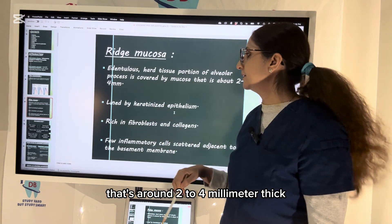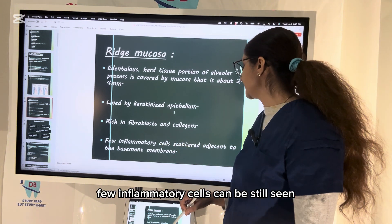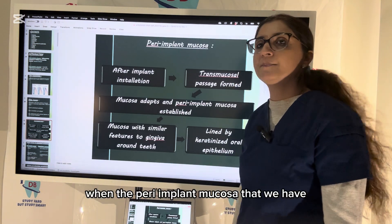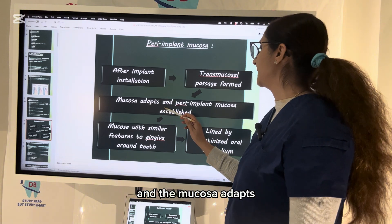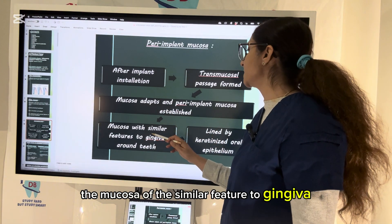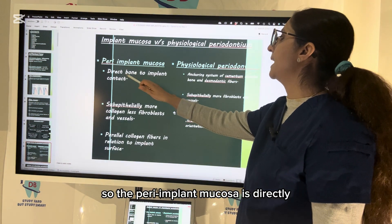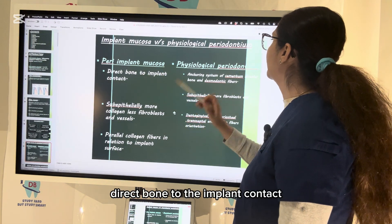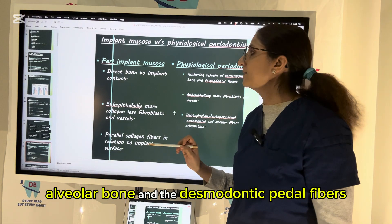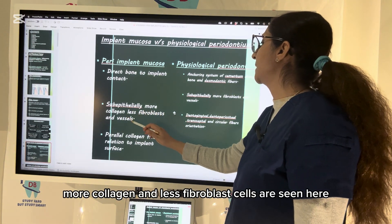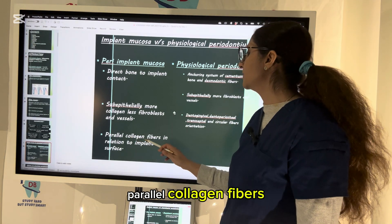The mucosa in the edentulous area is covered by mucosa that is around two to four millimeters thick, lined by keratinized epithelium, rich in fibroblasts and collagen, with few inflammatory cells scattered adjacent to the basement membrane. After implant installation, the transmucosal passage is formed and peri-implant mucosa is established, with similar features to gingiva around a tooth. Sub-epithelially, peri-implant mucosa has more collagen and less fibroblasts and vessels, while physiological periodontium has more fibroblasts and vessels.